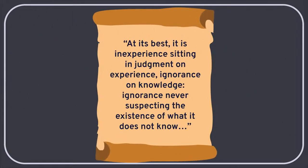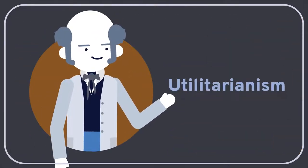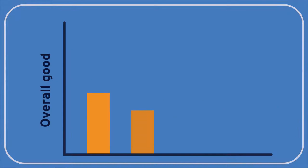But Mill also echoed Plato's concern about the qualifications of ordinary citizens to make wise policy decisions. At its best, it is inexperience sitting in judgment on experience, ignorance on knowledge, ignorance never suspecting the existence of what it does not know. Mill was an advocate of the ethical theory known as utilitarianism, which says that the best course of action is always to do whatever provides the greatest overall benefit to society as a whole.